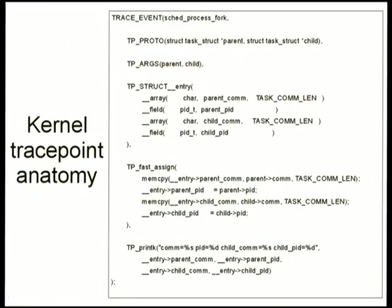For those wanting to understand what a kernel trace point looks like: here's the sched_process_fork trace point. Every time you fork in the kernel, this trace point fires if activated. When defining a trace point, you write a small structure specifying the function prototype with its parameters, the actual argument values to write to the trace buffer — parent comm, parent PID, child comm, child PID — plus how to copy data to the buffer and how to convert it to a text string.